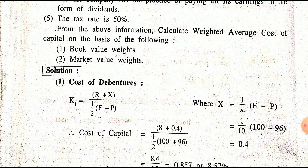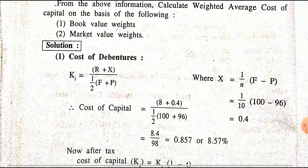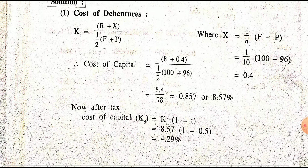For debenture, the redeemable debenture formula is: R plus X divided by 1, divided by 2 of F plus P — where F means face value and P means net proceed. Net proceed accounts for discount or premium (plus) and flotation cost (always minus). X in the formula is 1 divided by P, 1 divided by N, F minus P. KD before tax is Ki, and after tax KD equals Ki multiplied by (1 minus T).